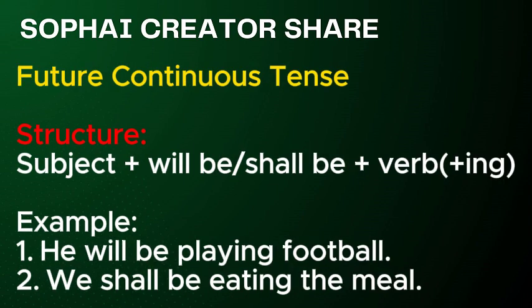Future continuous tense. Structure: Subject plus will be or shall be, plus verb plus -ing. Examples: 1. He will be playing football. 2. We shall be eating the meal.